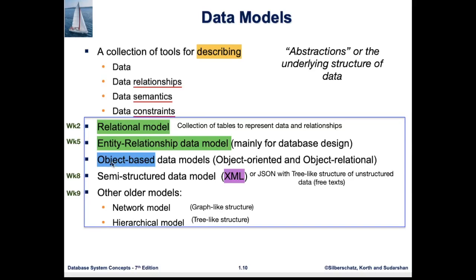We also have object-based data models, very similar to the struct model — classes and instances of objects. This covers object-oriented and object-relational models. For week 8, we will cover data models that have some structure — called semi-structured data models — commonly written in formats like XML or JSON. These have a certain structure, but inside a particular segment of that structure, the content can be unstructured or free text, and is commonly used for web-based applications.